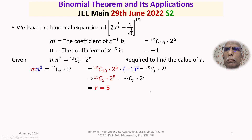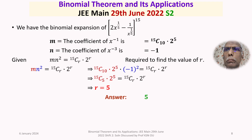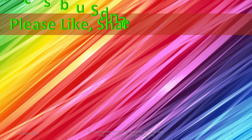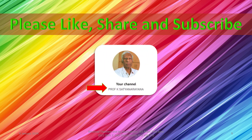The answer to this question is r = 5. That concludes the detailed discussion of the solution from the section Binomial Theorem and its applications. It is an easy question, and I hope you have understood the solution. All the best — thank you.